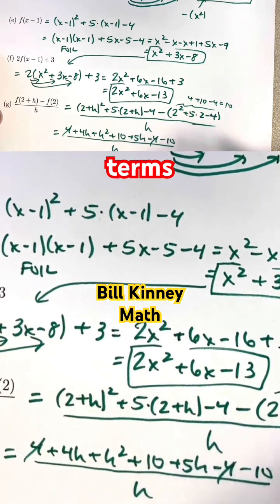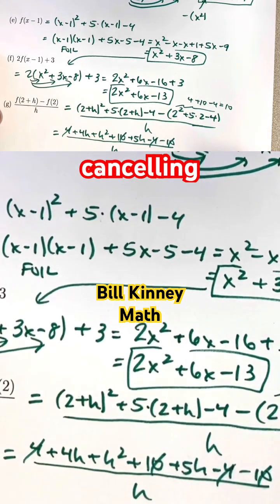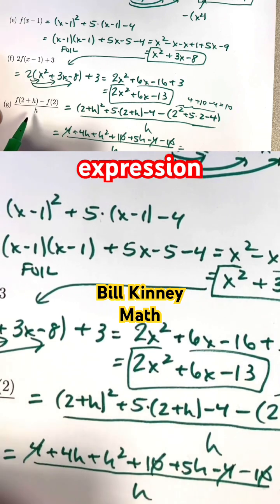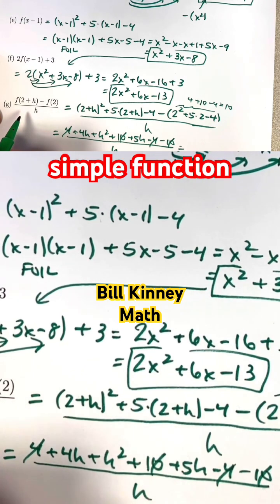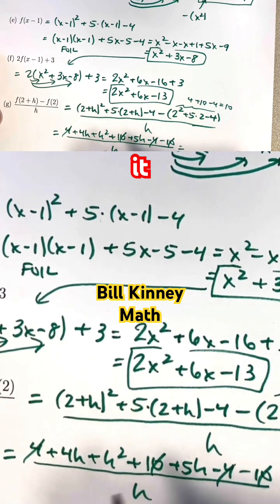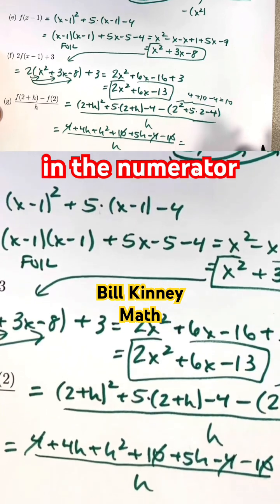The constant terms end up canceling. That will always happen with this expression when f is a fairly simple function like a quadratic. It turns out the constant terms in the numerator will always end up canceling.